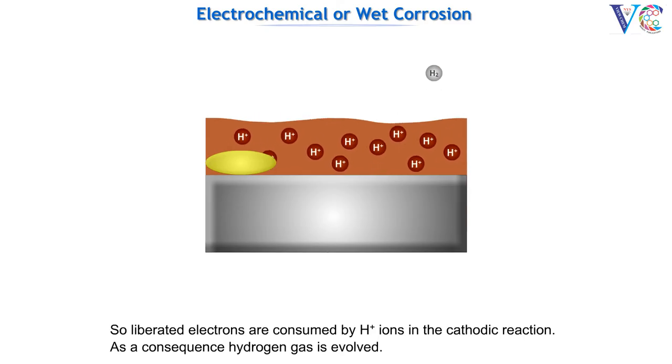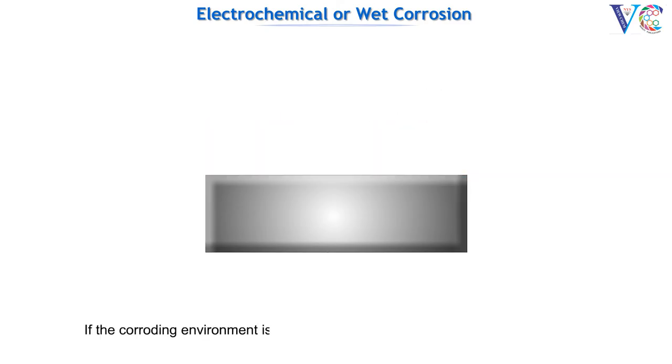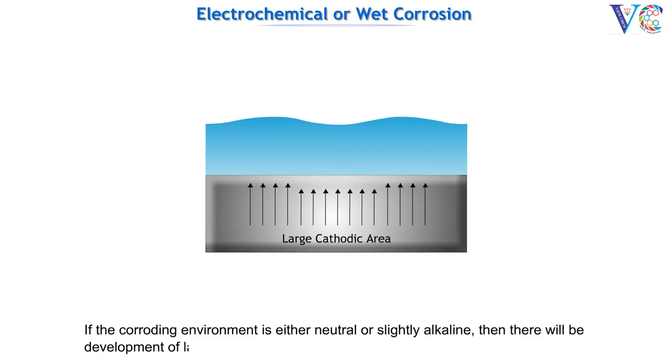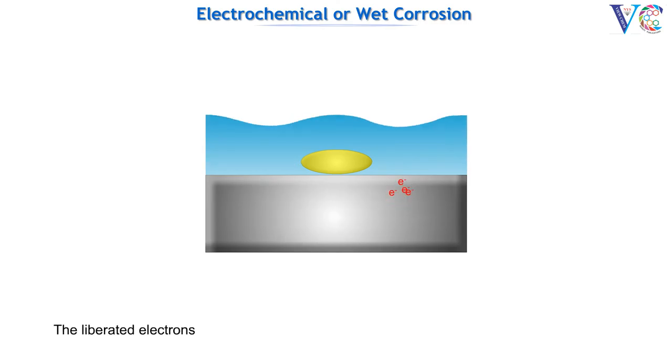If the corroding environment is either neutral or slightly alkaline, then there will be development of a large cathodic area and small anodic area. The liberated electrons as a consequence of the anodic reaction are quenched by the reaction with oxygen and water to form hydroxide ions.